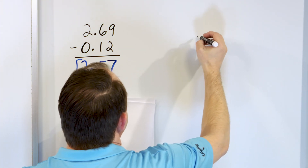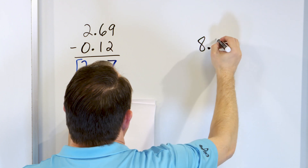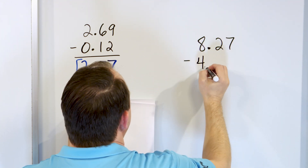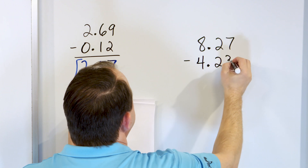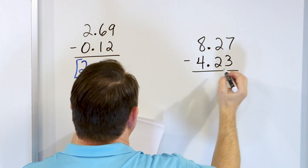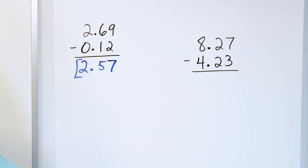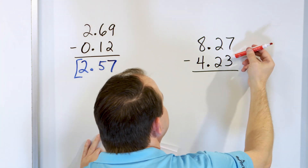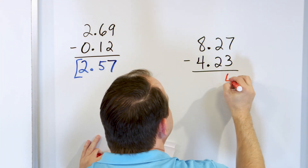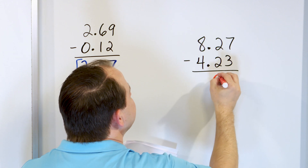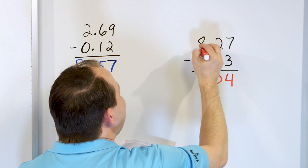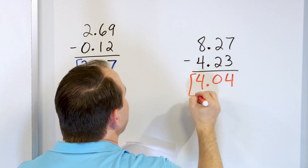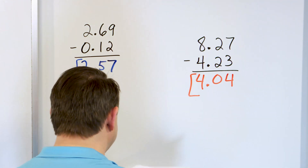Next problem, number 6: 8.27. And we'll subtract from that 4.23. In the far right: 7 minus 3 — go down: 6, 5, 4. We land on 4. 2 minus 2 is 0. 8 minus 4 is 4. And the decimal drops right out of the problem: 4.04.